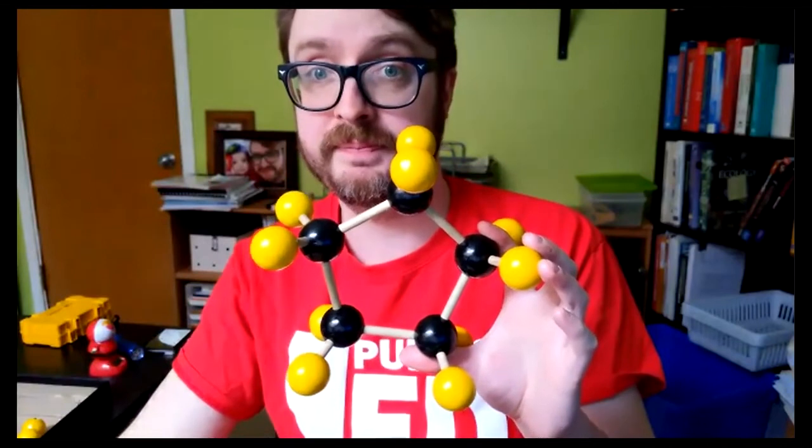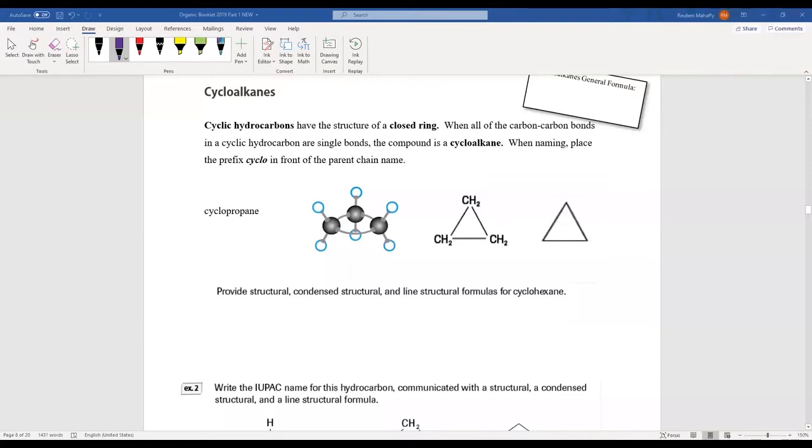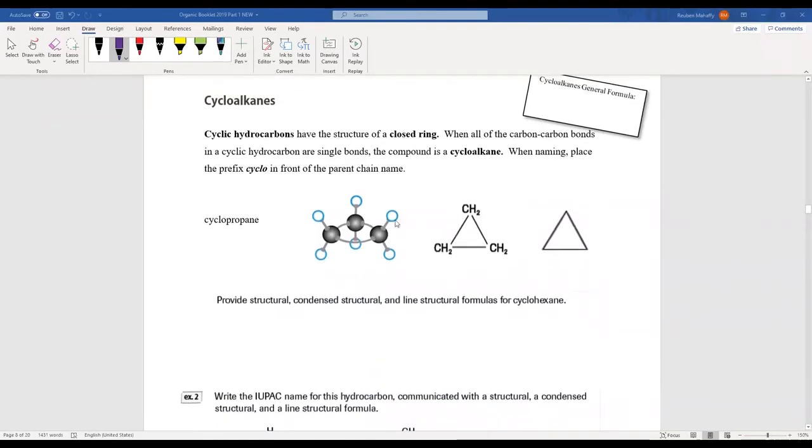Let's take a look at our notes. Cyclic compounds have the structure of a closed ring. Because they're a closed ring, the general formula is if I have n carbons, I'll have H2n - twice the number of hydrogens relative to my number of carbons. If I have all single carbon-carbon bonds, then instead of having an alkane I have what's called a cycloalkane, and I identify that with the prefix cyclo in front of the parent chain name.